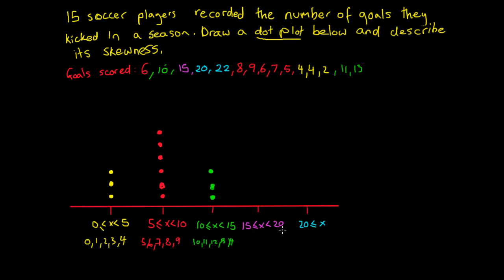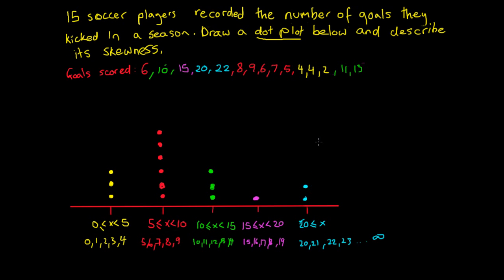Our next category is x ≥ 15 and less than 20, so the numbers 15, 16, 17, 18, and 19 — not 20, because 20 would be in the next category. Going through, we've got a 15, and no others. Then in our last category we're after numbers ≥ 20 — that could be 20, 21, 22, and so on up to infinity. Going through, we've got a 20 and a 22, which are both included.